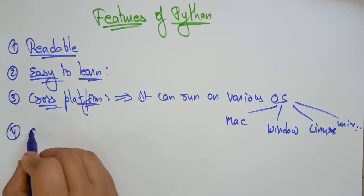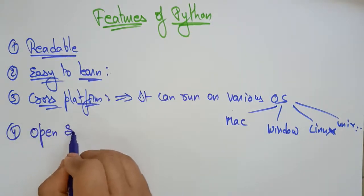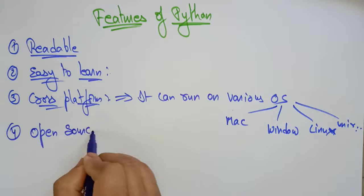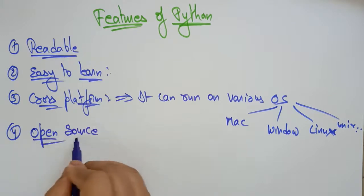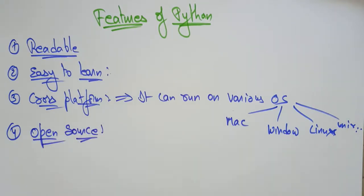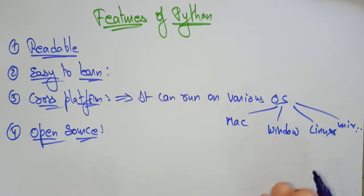Python is a cross platform as well as portable language. The next feature is open source. It is an open source programming language, meaning you can easily download and view the source code of the program. That's why we call Python an open source language — you can view the source code as well.